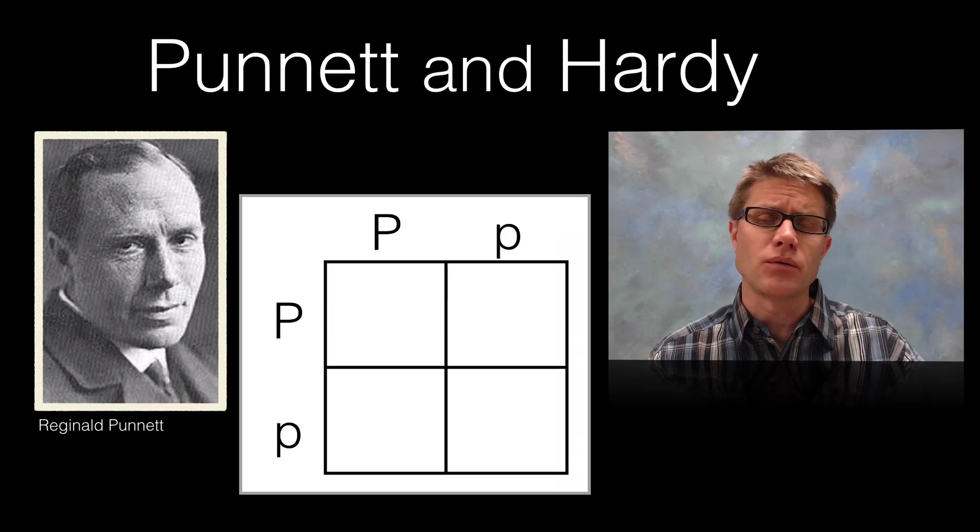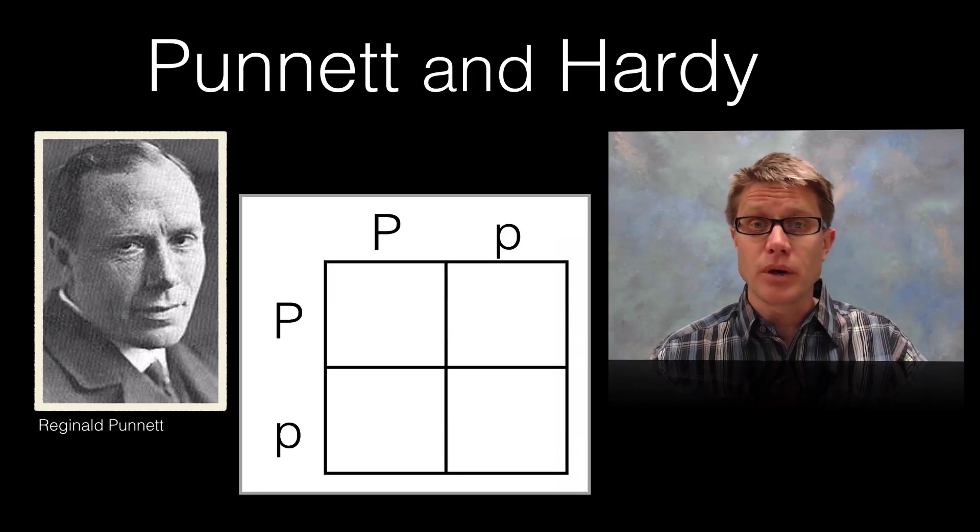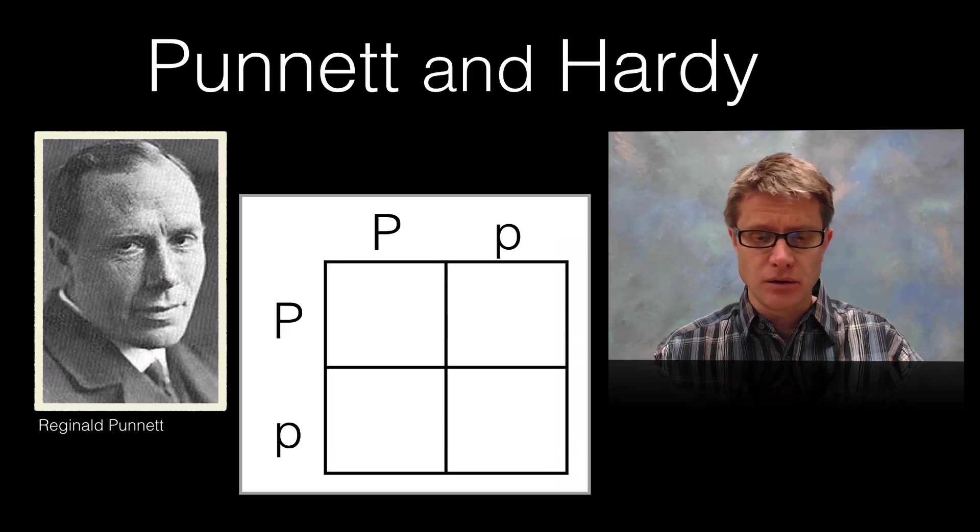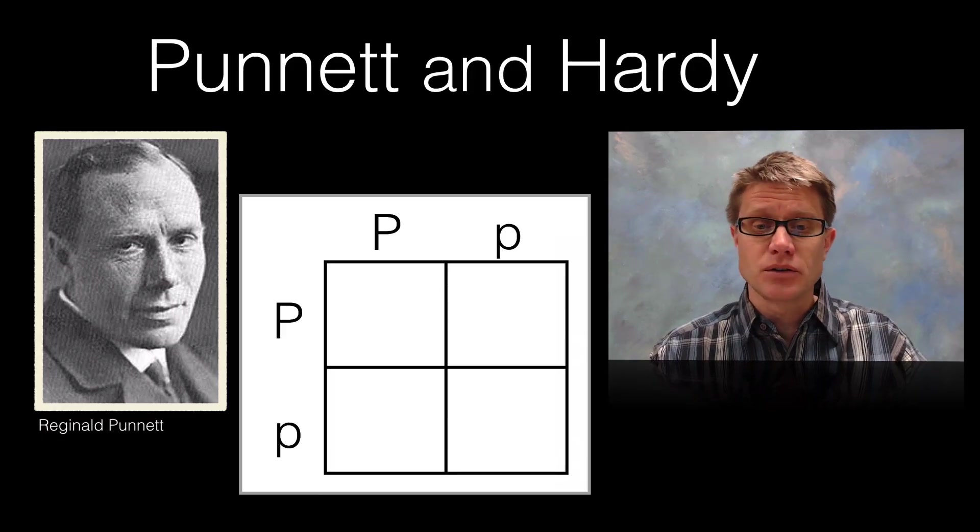And so let's start with the work of Reginald Punnett. You know him because he came up with this idea of the Punnett Square which is applying the work of Mendel. And it's a really neat model you can use to look at genetics.